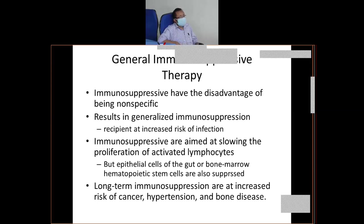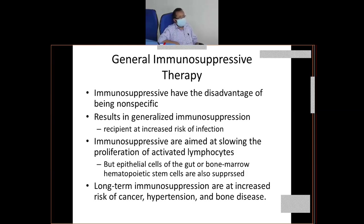Now let's discuss general immunosuppressive therapy. Before giving the graft, you have to suppress the immunity of the recipient. If you reduce the immunity of the recipient, the graft rejection will be less and tolerance will be higher. But there is a problem — if you generalize immunosuppression and reduce the immunity, the individual will have more susceptibility to infection.